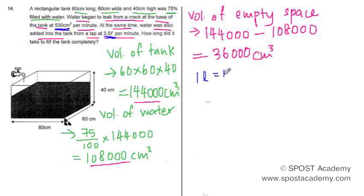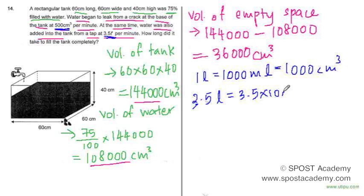1 liter is equal to 1000 ml which is also equal to 1000 cm³. So 3.5 liters will be equal to 3.5 times 1000 and we will get 3500 cm³.